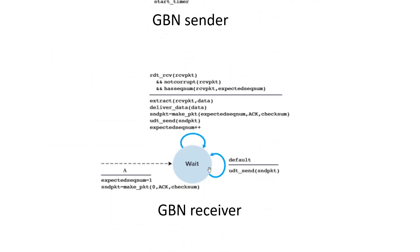At the receiver side, if there is no corruption and the sequence number is as expected, the data is extracted from the packet and sent to the upper layer. Otherwise, by default, it sends a packet with the next expected sequence number as an acknowledgement. For initialization, the expected sequence number equals 1 and acknowledgement is sent with sequence number 0.